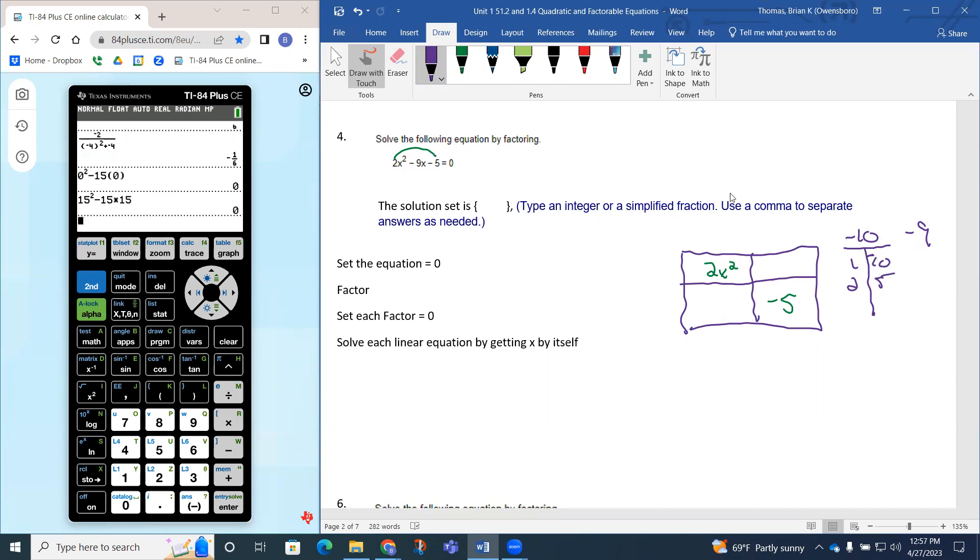I'm going to use this to rewrite my linear term, so the linear term is going to be this 1x and this negative 10x. It doesn't really matter where you put those two.